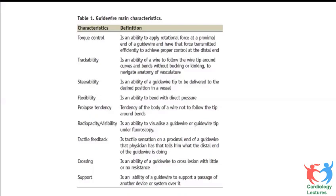Trackability is the ability of the wire to follow the wire tip around curves and bends without buckling or kinking — it needs to take the shape of the vessel. Steerability is the ability of the guidewire tip to be delivered to the desired portion of the vessel, navigating tortuosity, calcified lesions, or acute bends to reach the distal part.